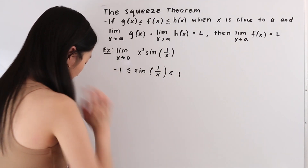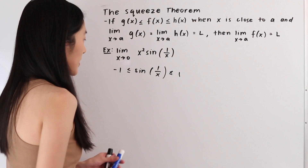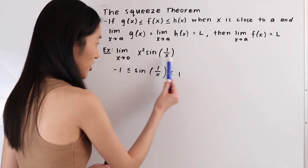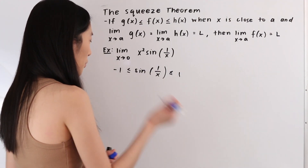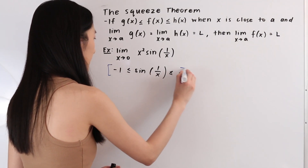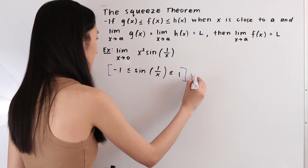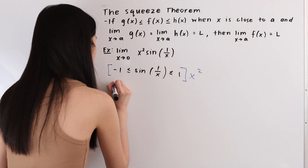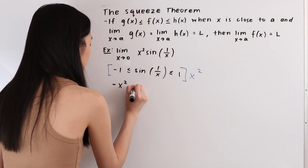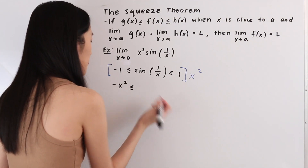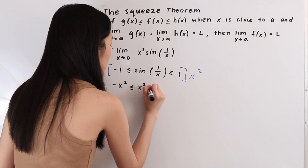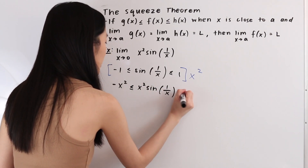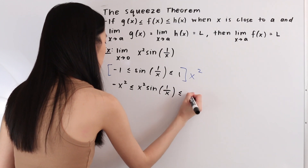As our next step, we want to get this middle function to match the function we're taking the limit of, so we're going to multiply by x². Multiplying this out, we have: negative x² ≤ x² sin(1/x) ≤ x².